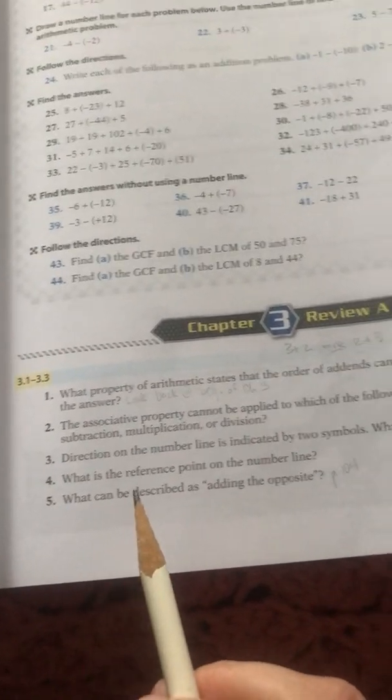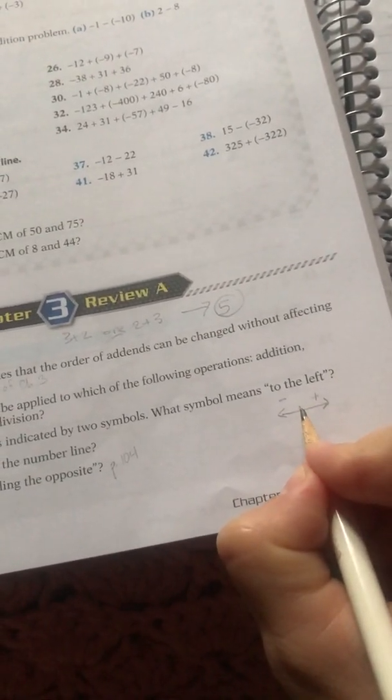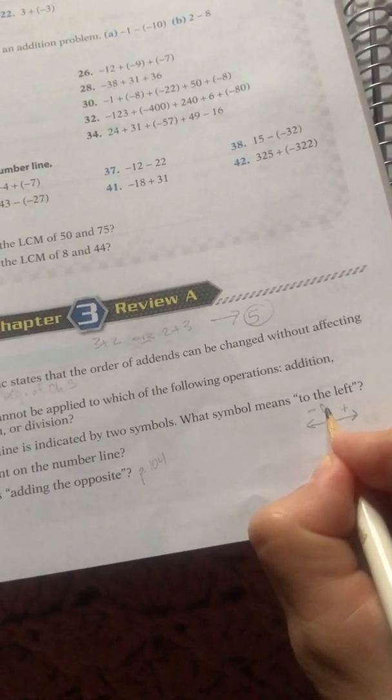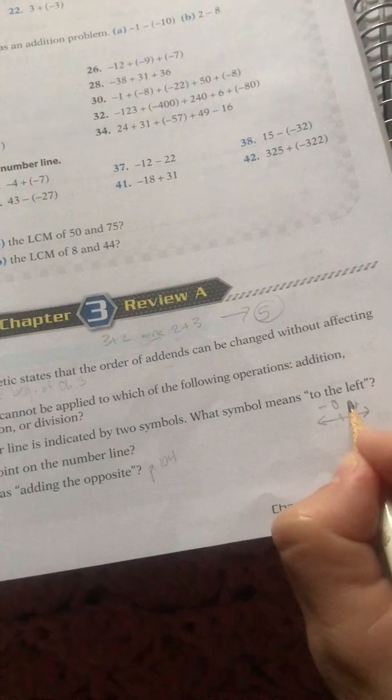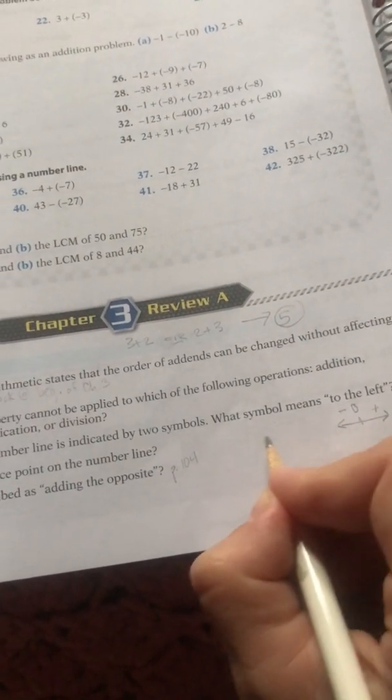Number four, what is the reference point on the number line? That reference point where you start counting up from it, you should know that, that is zero. Count up, positive one, two, three, four, and count down, negative one, two, three, four, it goes on and on.